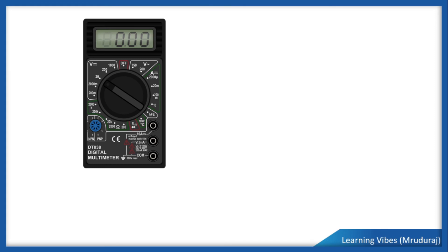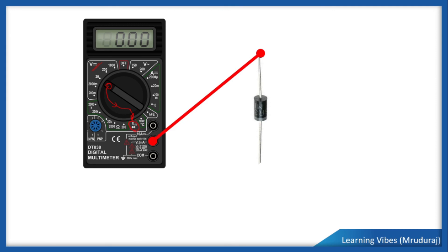Now I'm going to tell you how to check the diode with a multimeter. I have prepared a separate video for this, and the link is in the description box. Here I'm explaining it in short. This is a simple multimeter. To check the diode, first we need to turn this knob — it is currently in the voltage section — and shift it to the diode and continuity checking section. Turn the knob in that direction, then connect one terminal to the positive of the diode and the other to the negative.